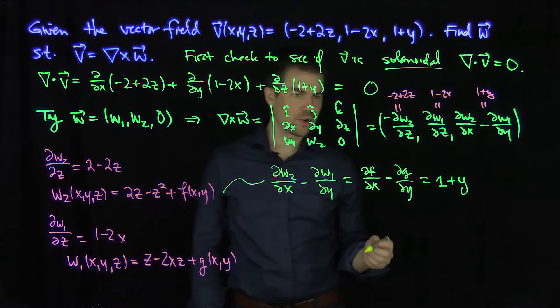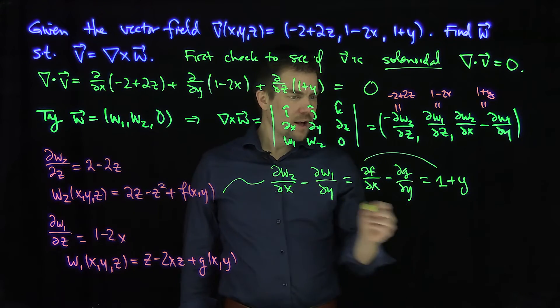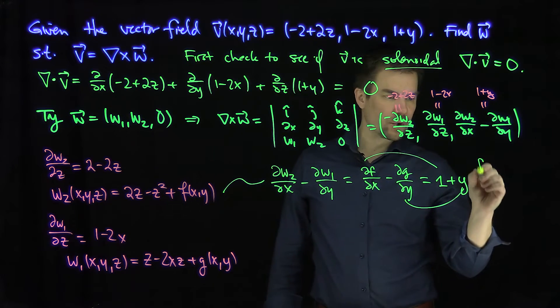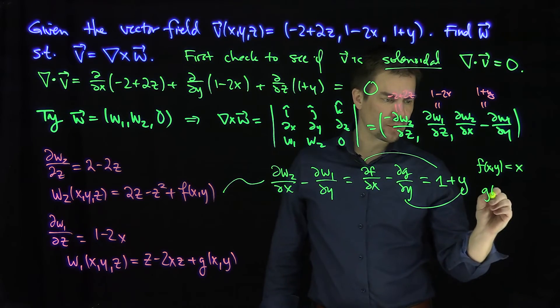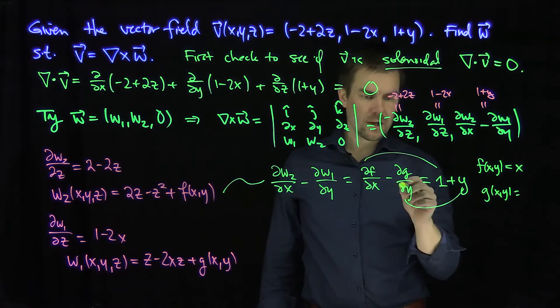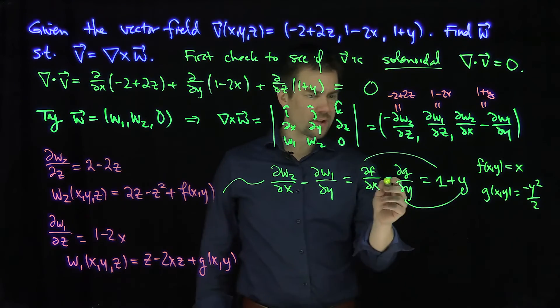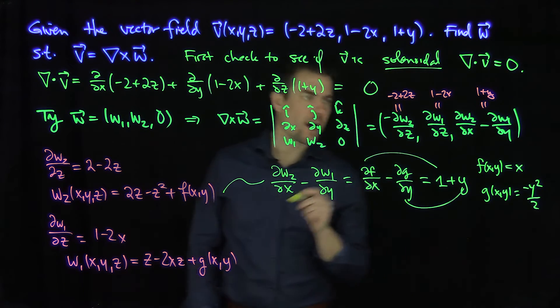And there's lots of ways for me to satisfy this equation. In particular, what I could do is I could match the f and the 1 and the gy with y. So one choice that will work is I can choose f of x, y just to be x. Then this x derivative is clearly 1. And I can choose g of x, y to be negative y squared over 2. That will be a choice such that the y derivative of this thing will be a negative y, which will turn to a positive y.